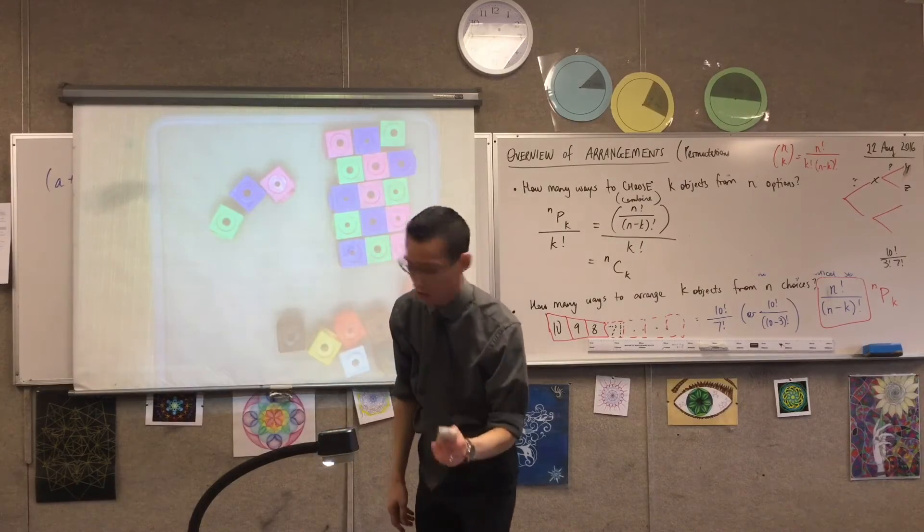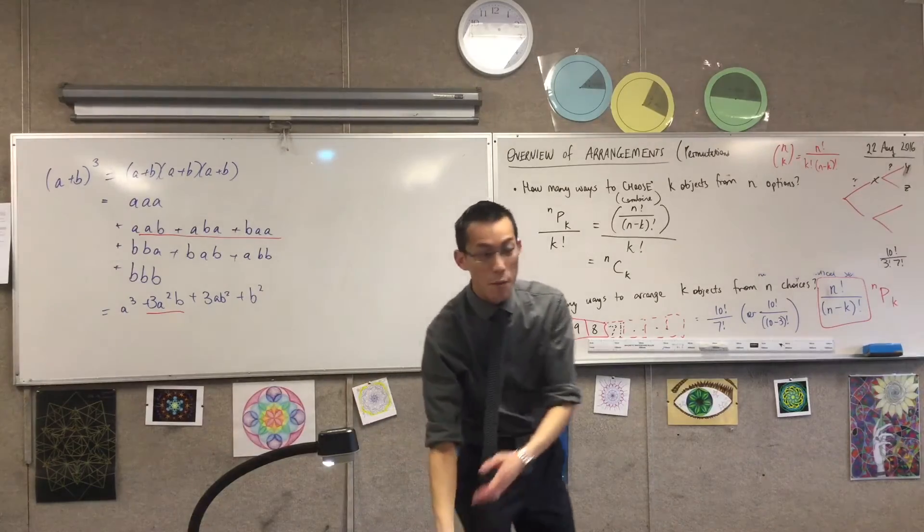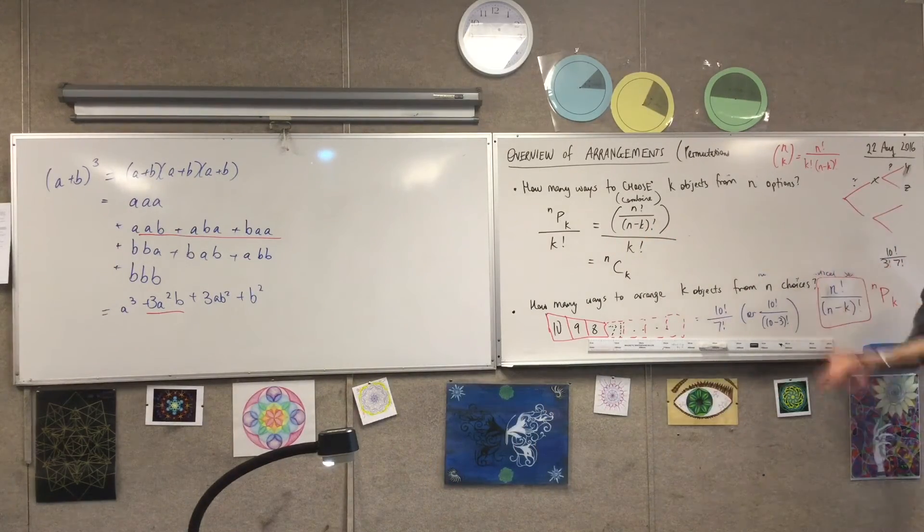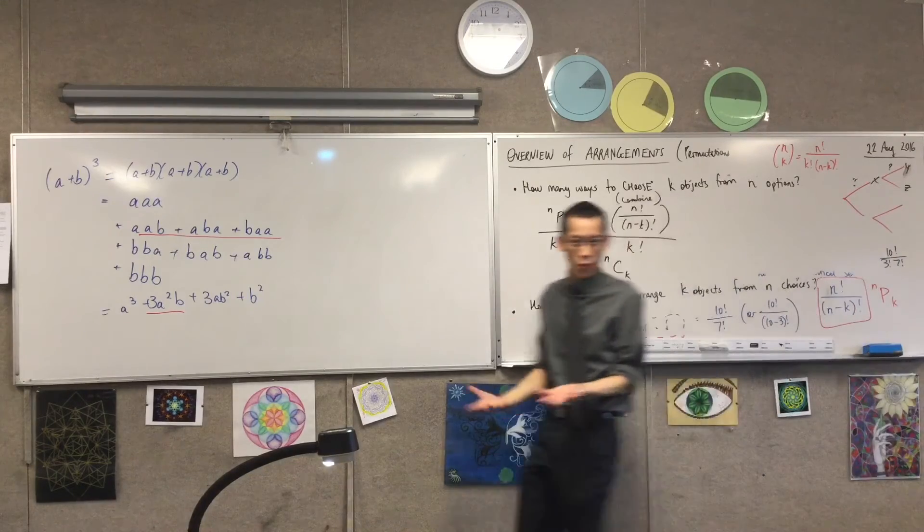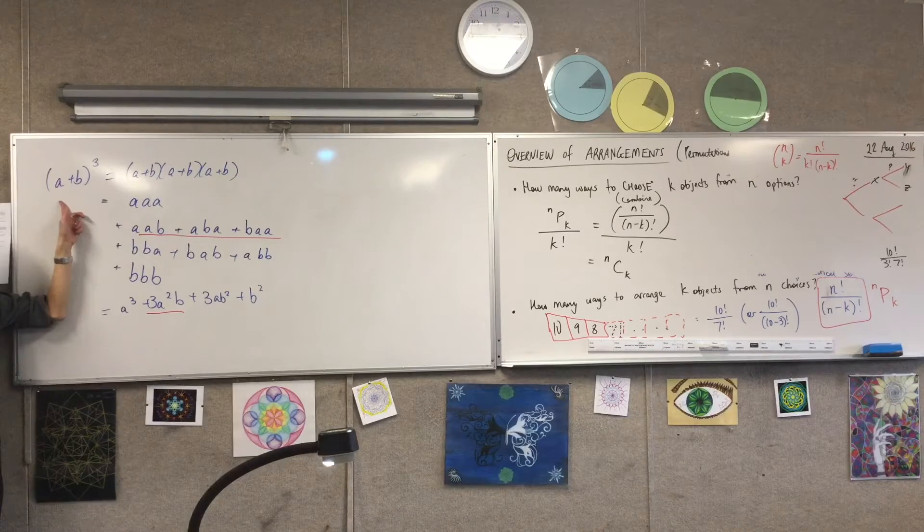And so we say, okay, tell me how big the pile is. Does that make sense? So binomial theorem all this time has been arranging objects. It's just that the objects that have been arranged are the two terms in your binomial. Does that make sense?